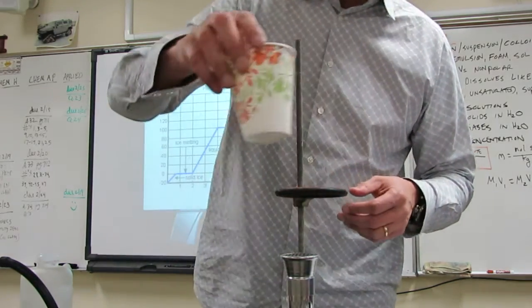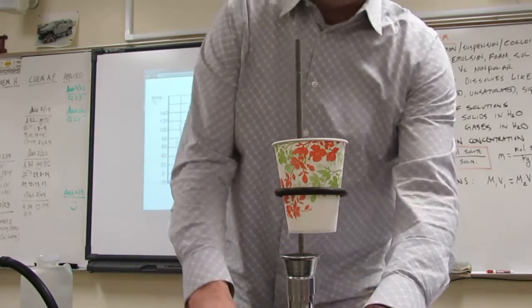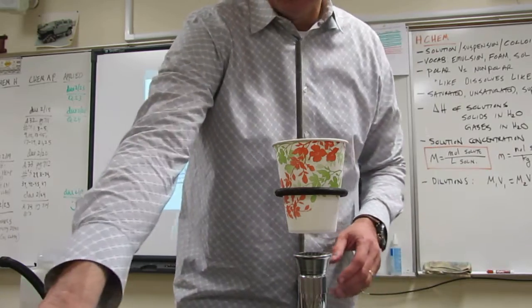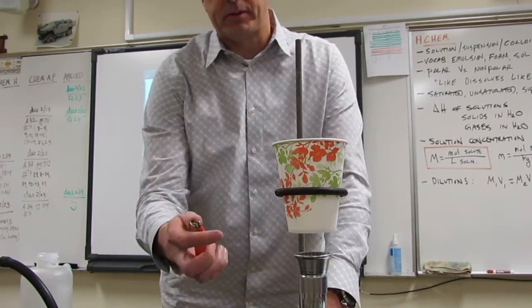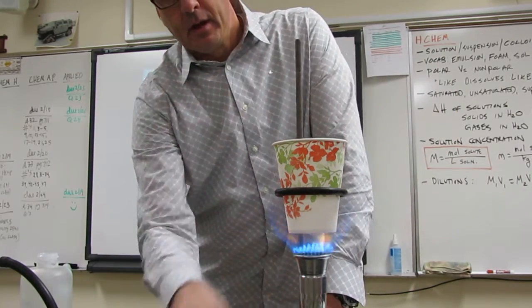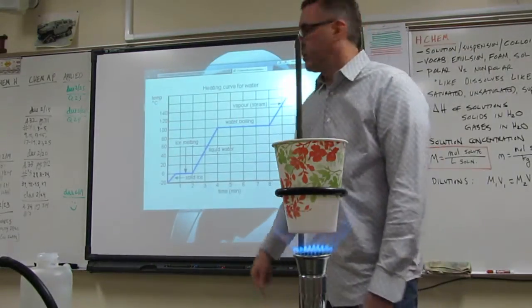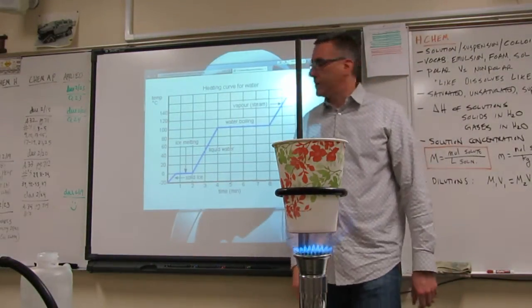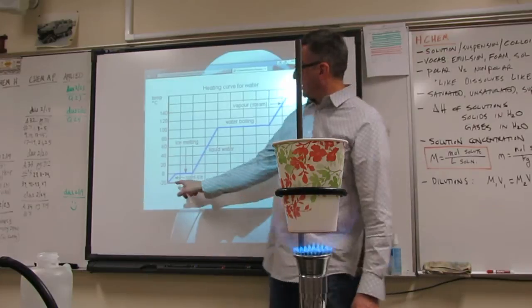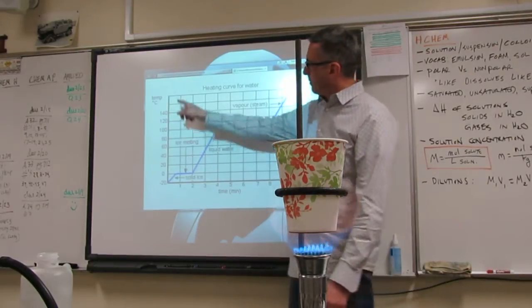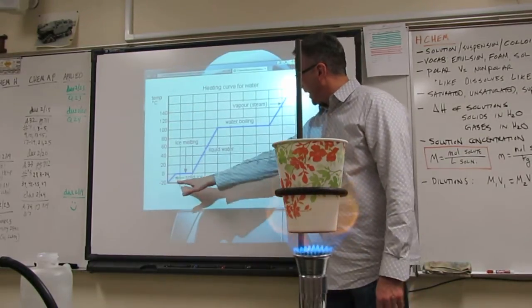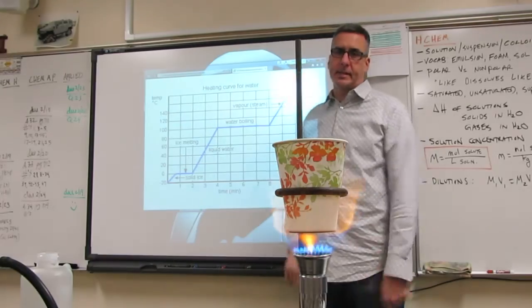So I'll set my cup of water in our ring clamp here. We'll turn on the gas and we'll light our Bunsen burner. And while that's heating, we'll talk a little bit about this graph back here. You can see that when I started with ice at negative 20, my y-axis is temperature and my x-axis is the time in minutes that I'm applying this heat.